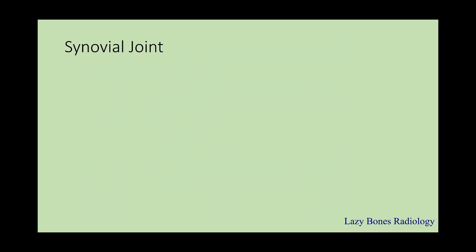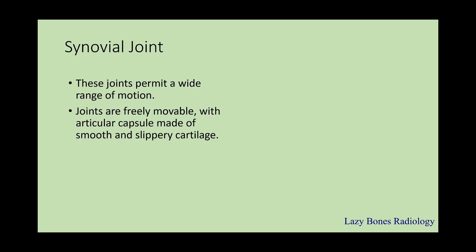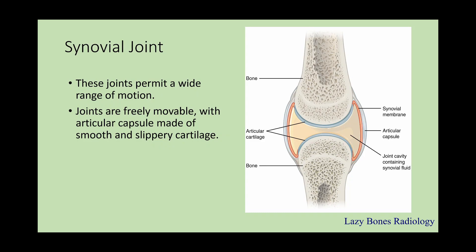The third group is the synovial joints. These joints permit a wide range of motion and are freely movable, with articulating capsules made of smooth and slippery cartilage. Here's a diagram illustrating a synovial joint — the capsule is filled with synovial fluid, which allows the joint to freely move with little to no resistance. There are six types of synovial joints in the body, which we use on a daily basis.